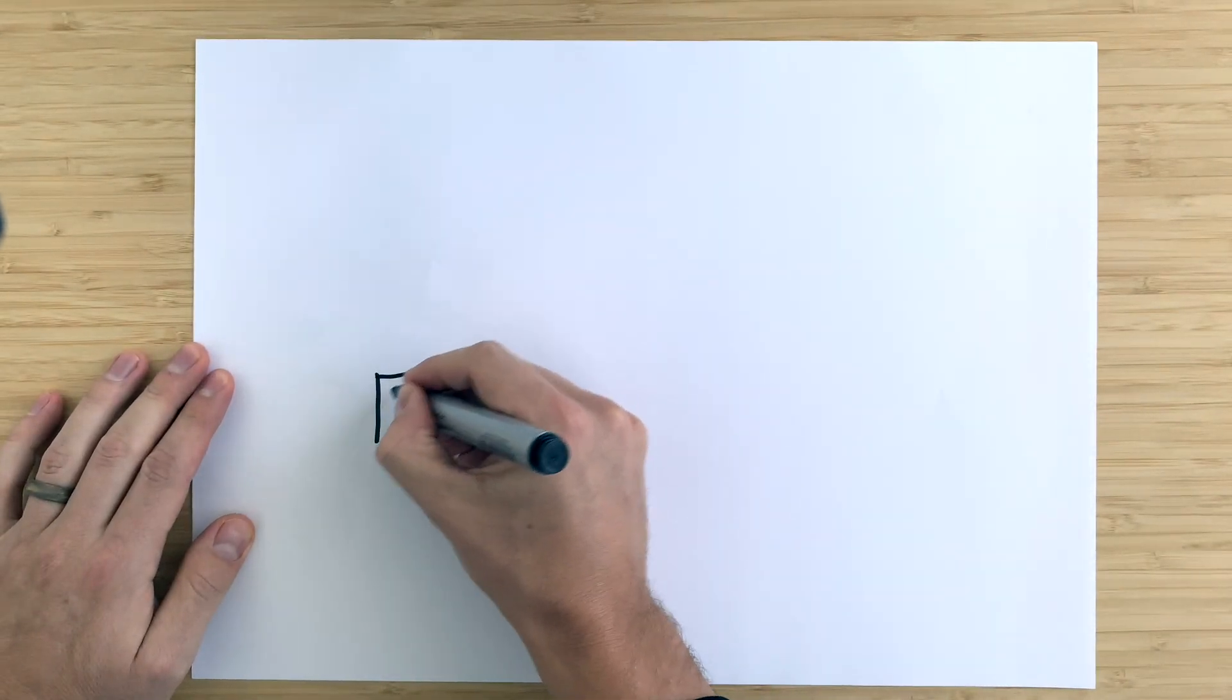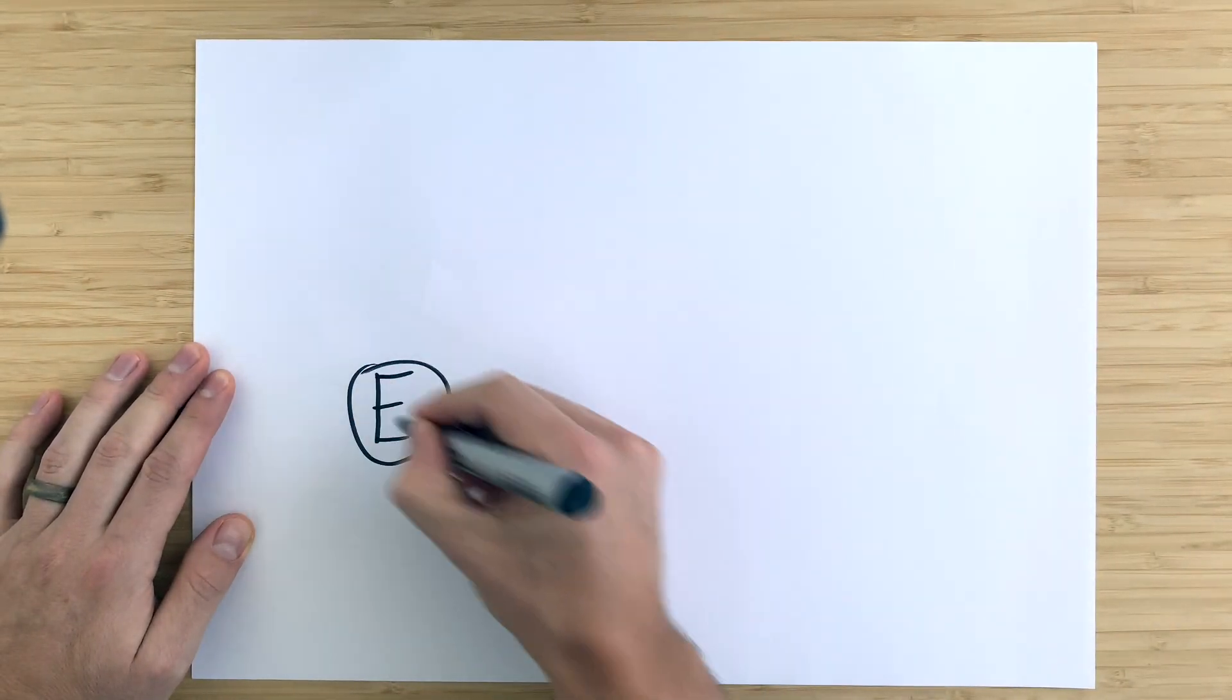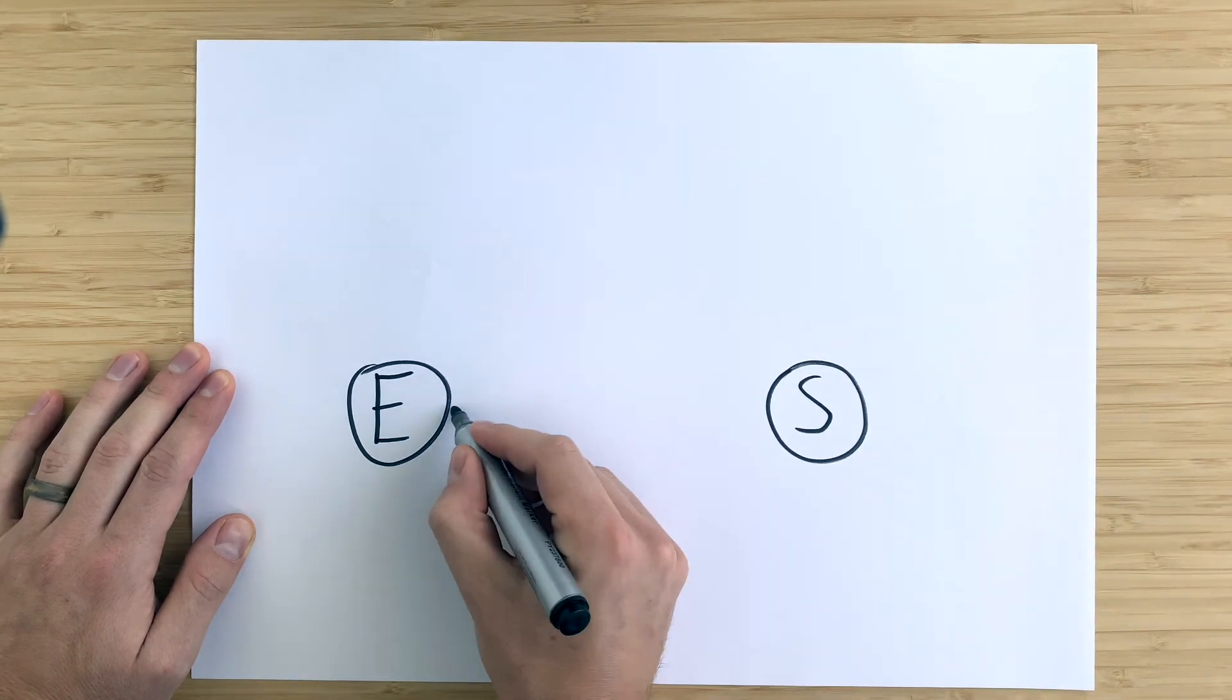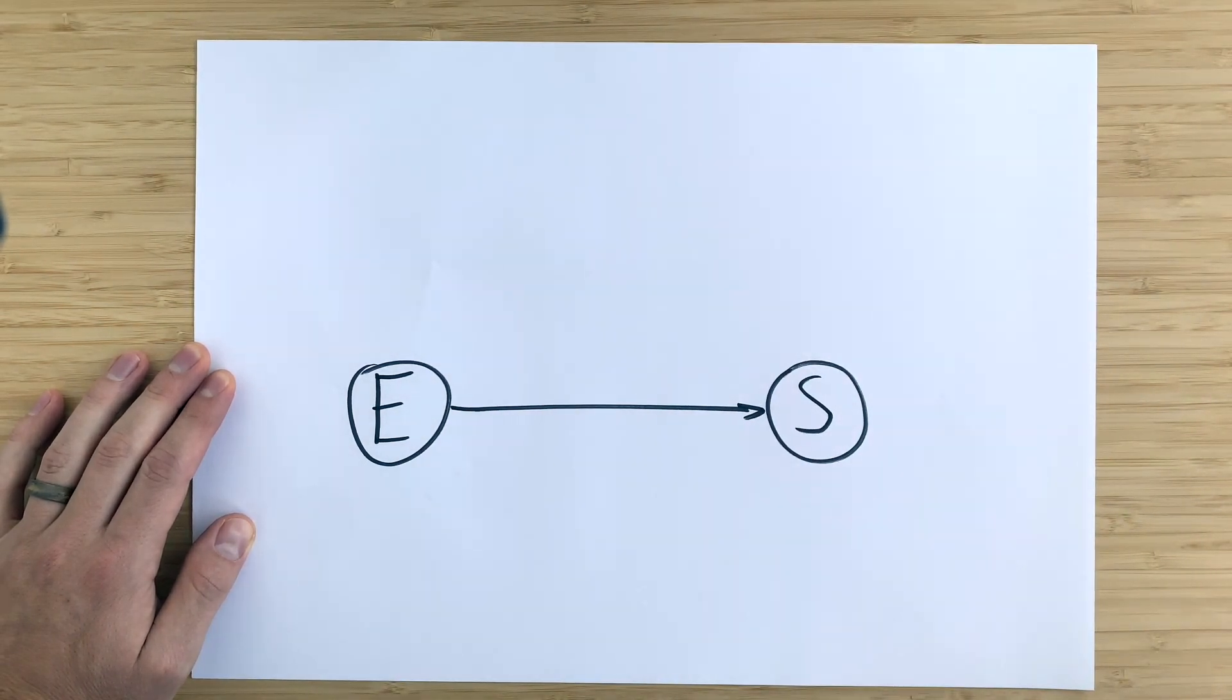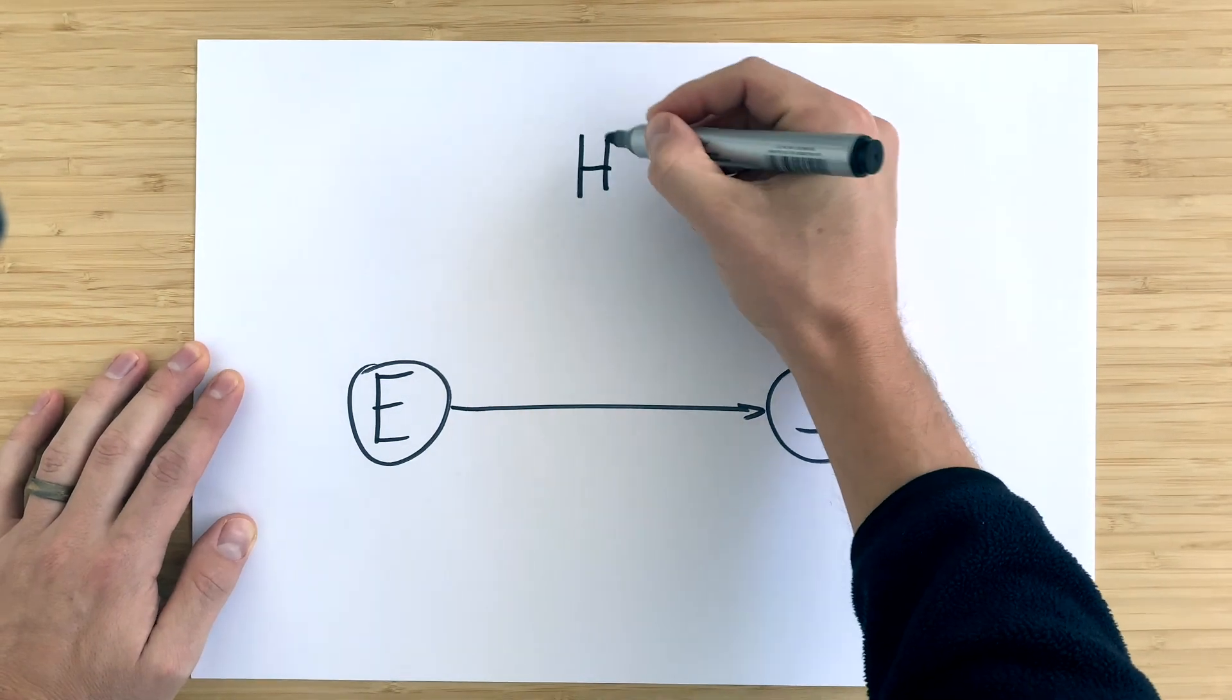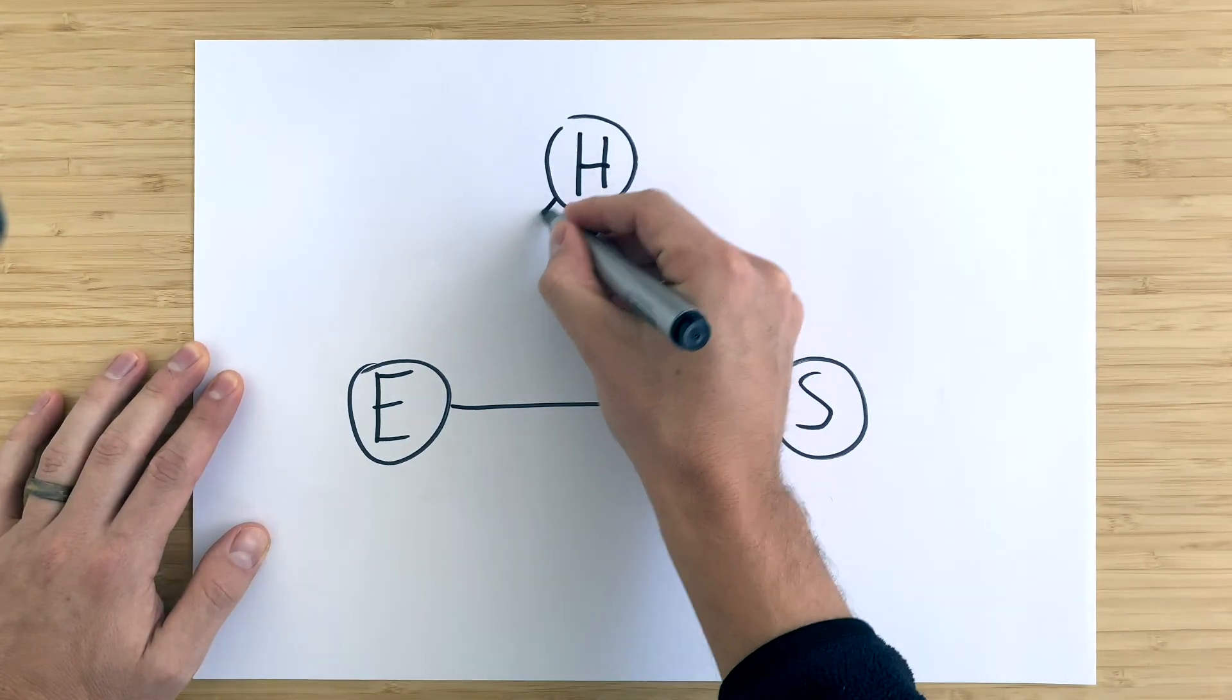The thing that changed my understanding the most is number two: the confounder. Let's look at an example for this. Imagine regular exercise is causing improved sleep quality. There might be something lurking in the background of all of this which is directly affecting cause and effect, like overall health.